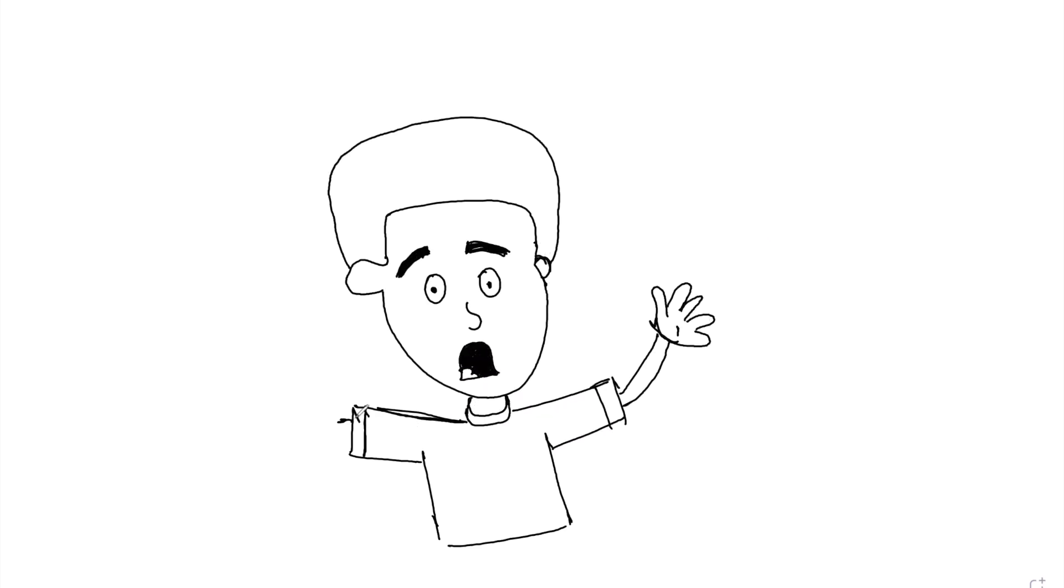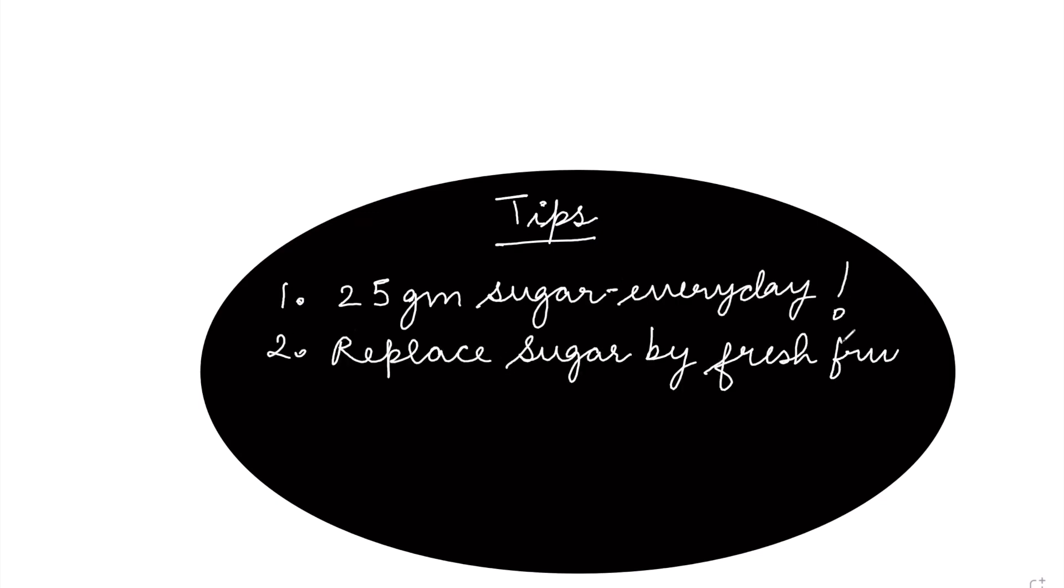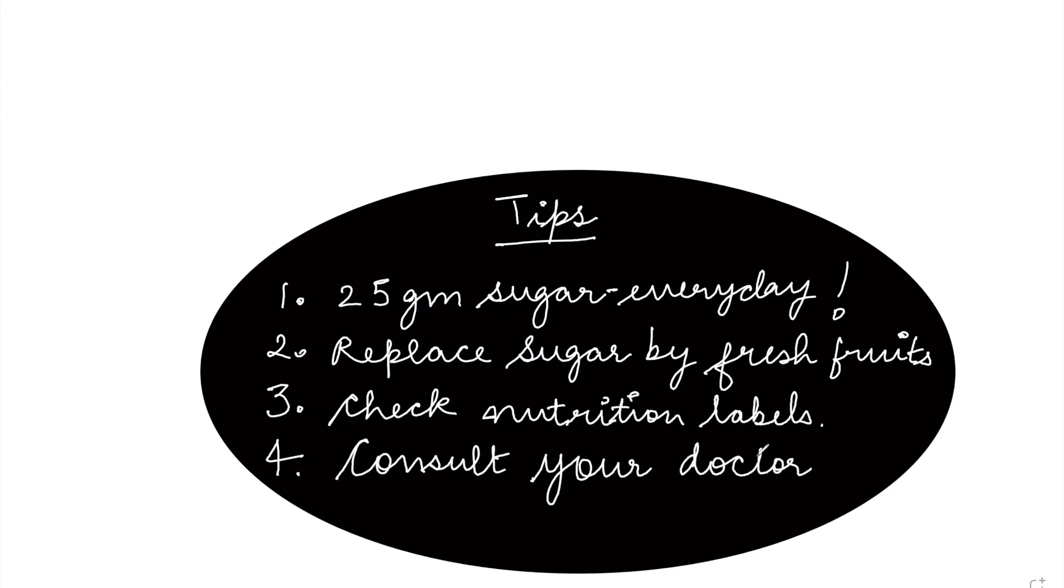As seen earlier, excess sugar consumption can lead to scary health issues. Here are a few tips to make sure your sugar consumption is regulated. First, try to consume at most 25 grams of sugar every day. Second, replace sugary snacks with fresh fruits. Third, make sure to check the labels for the food that you eat.